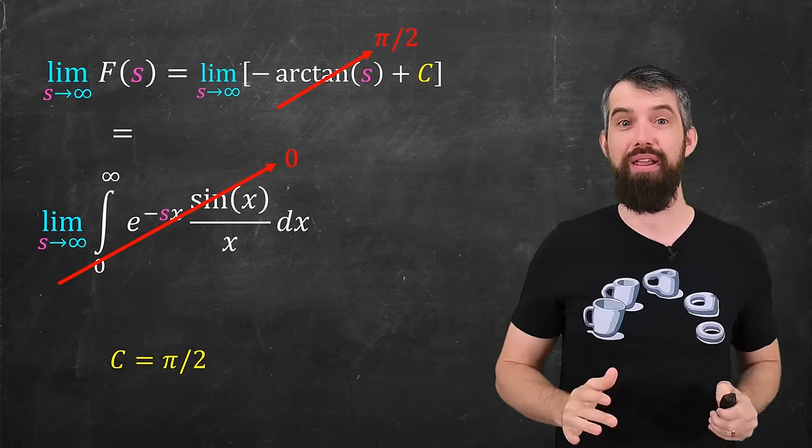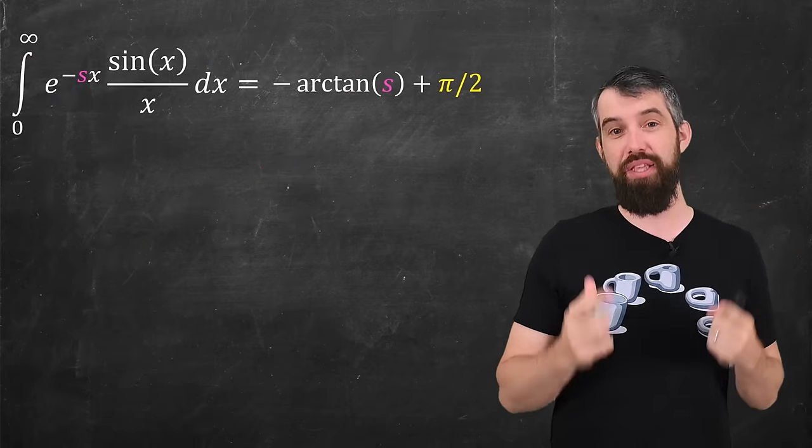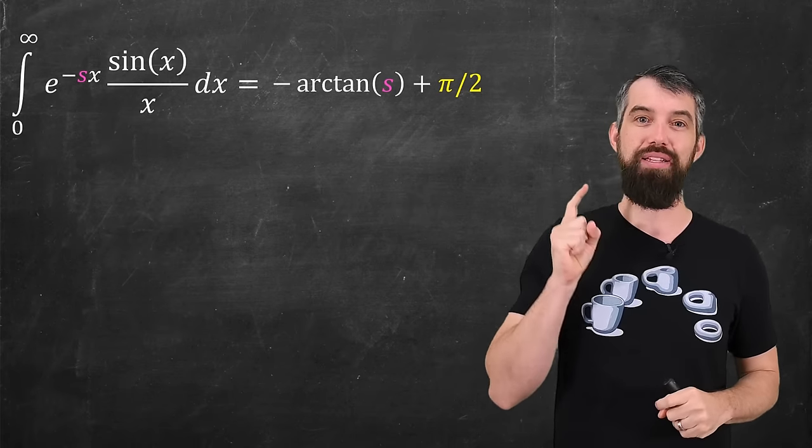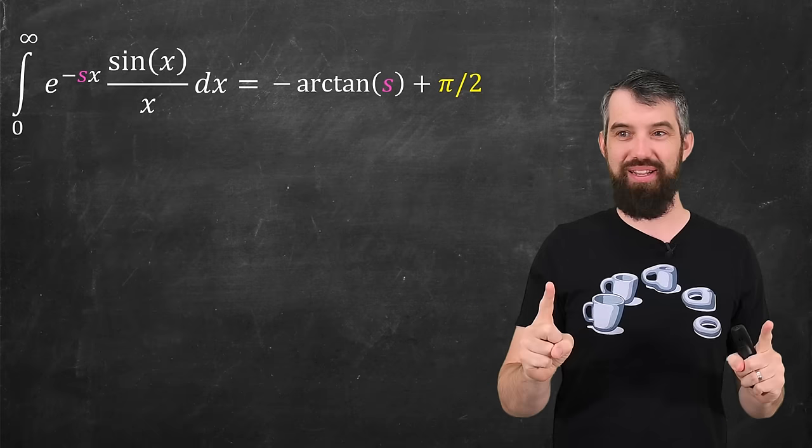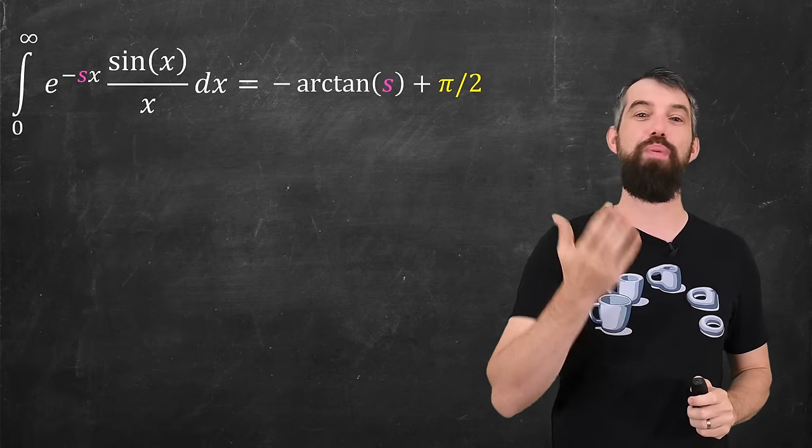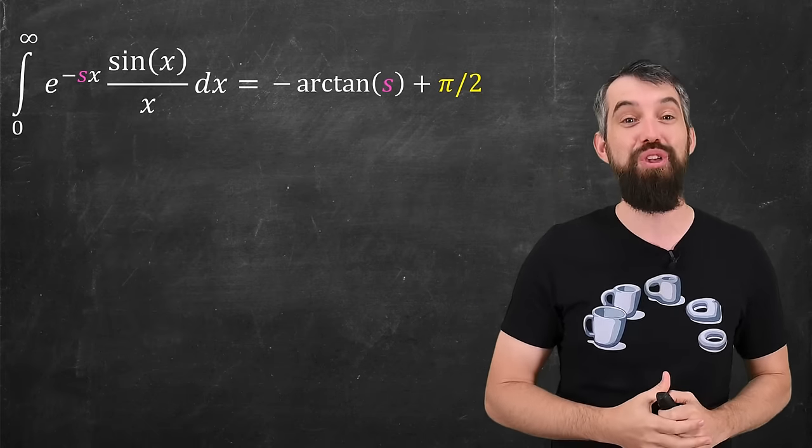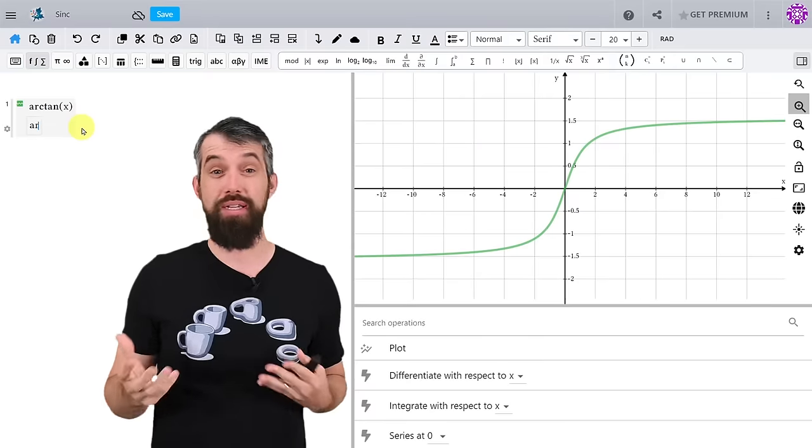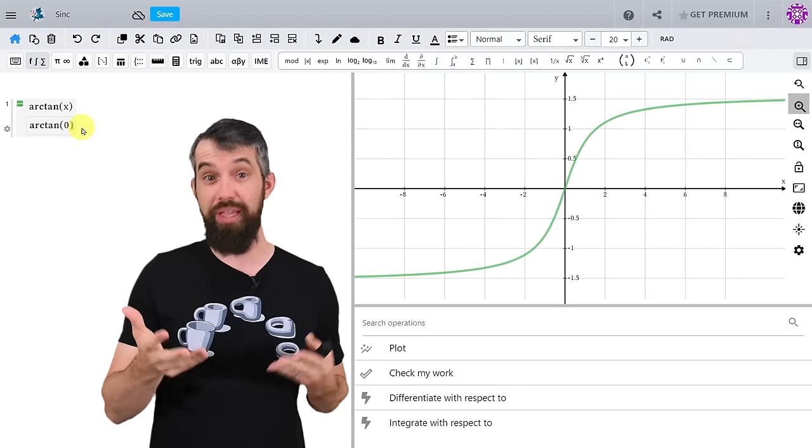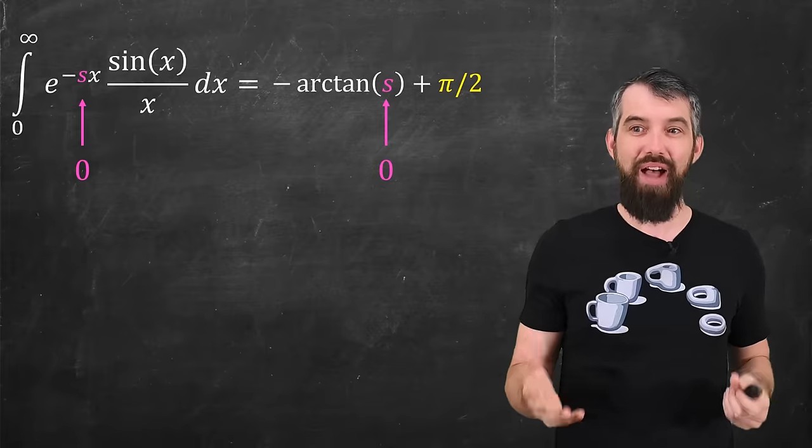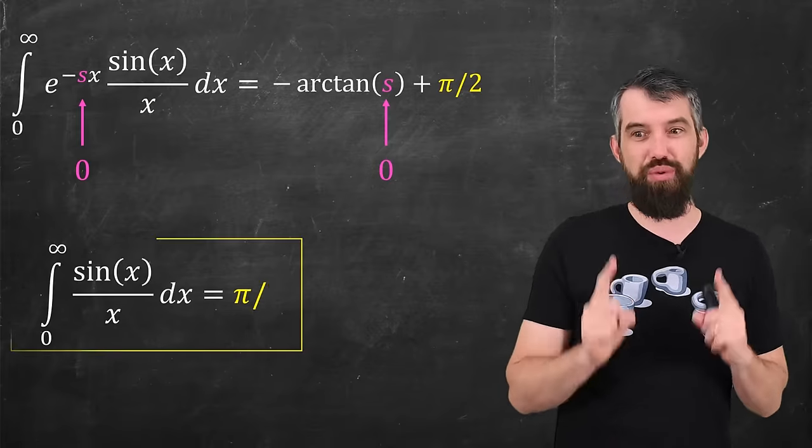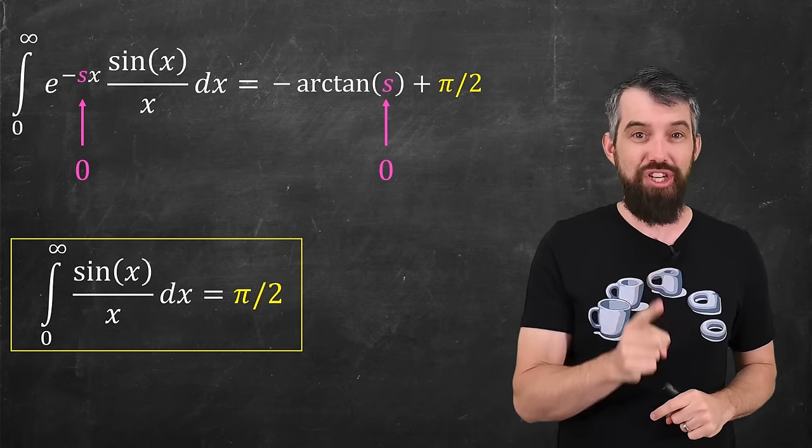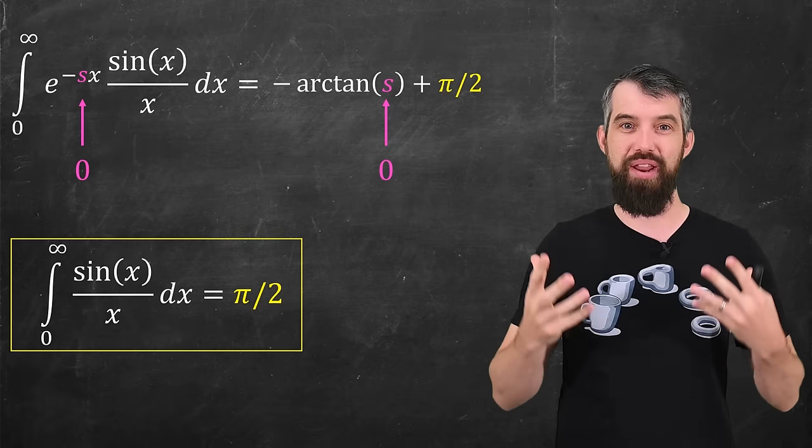We're almost done. So what I've been able to show is that the integral we've been studying is equal to negative arctan of s plus pi divided by two. And finally, I am at a spot where I can actually just evaluate what this is going to be when I plug in s equal to zero. Reviewing arctan one more time, arctan of zero is just zero. And so I get the final answer that the integral from zero to infinity of sin x divided by x, what happens when you plug in s equal to zero, is just equal to pi divided by two. This is the Dirichlet integral.